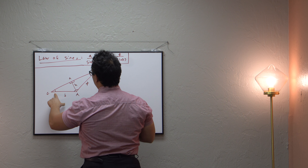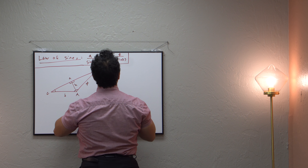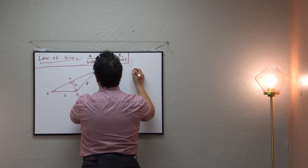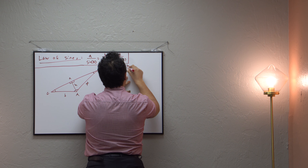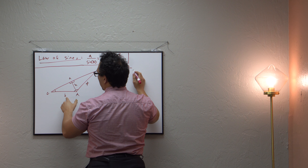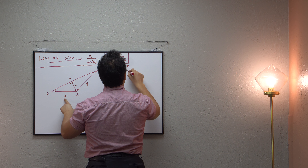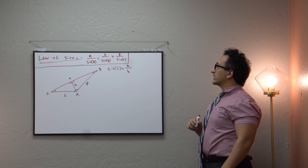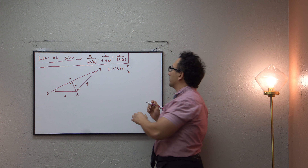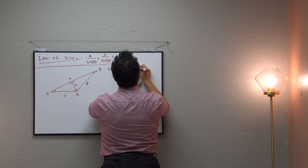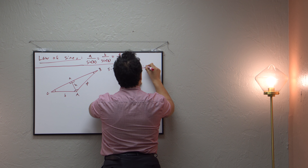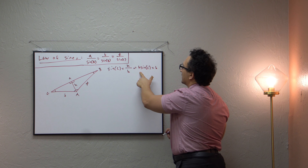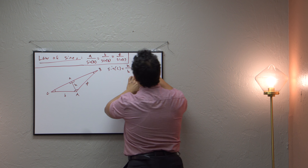So let's examine what the sine of this angle C is. Sine of big C is opposite over hypotenuse — so the opposite is little h, and the hypotenuse is the side opposite the 90-degree angle, which is little b. Notice that we can solve for little h by multiplying both sides by little b. When we do that, we get b·sine of capital C is equal to little h.